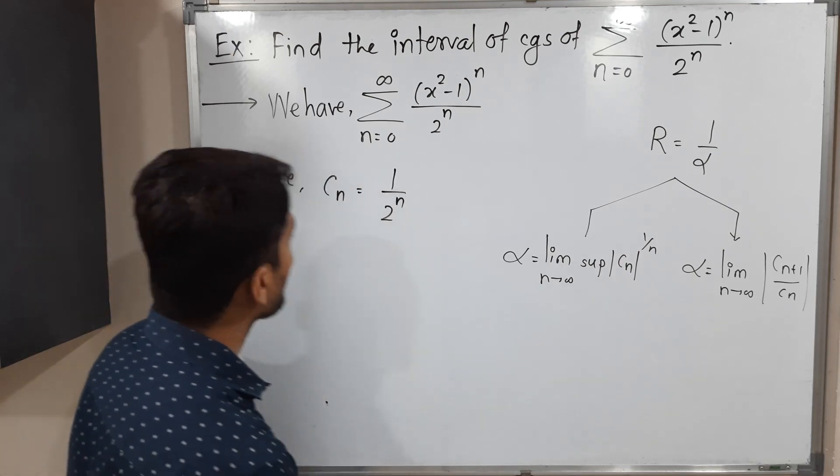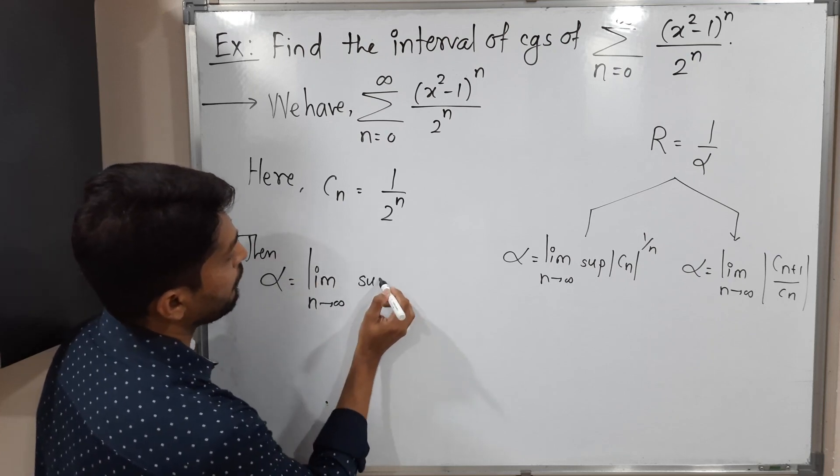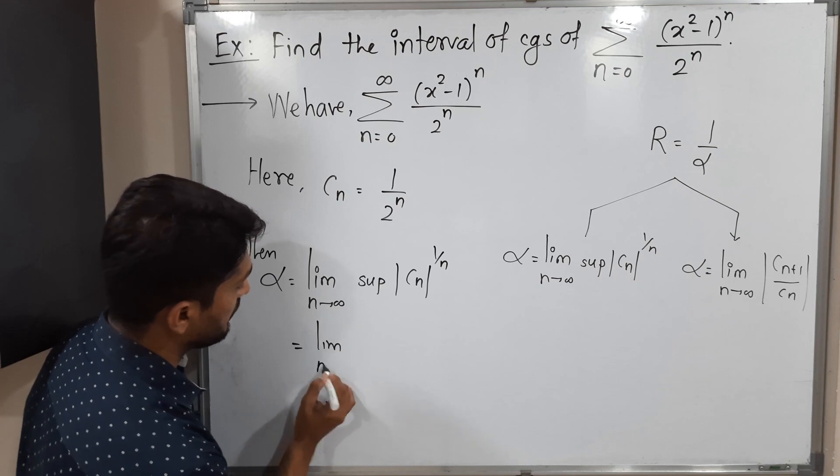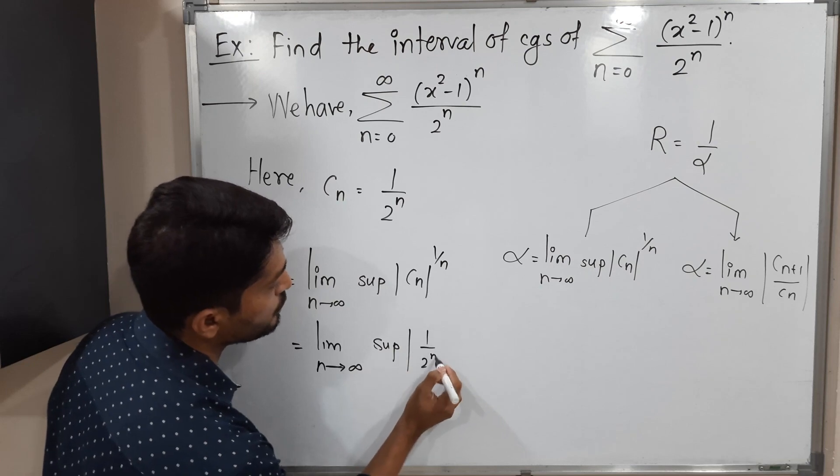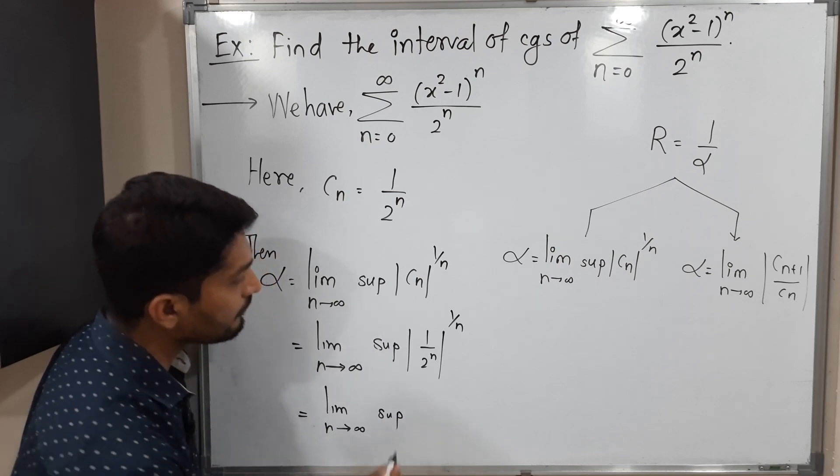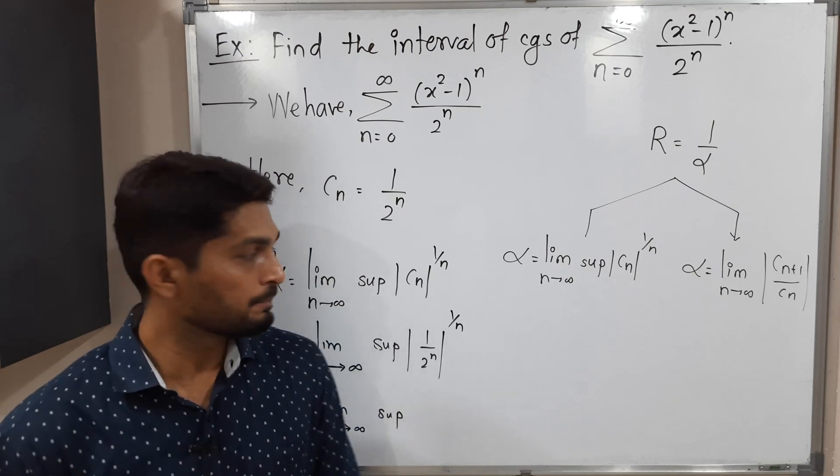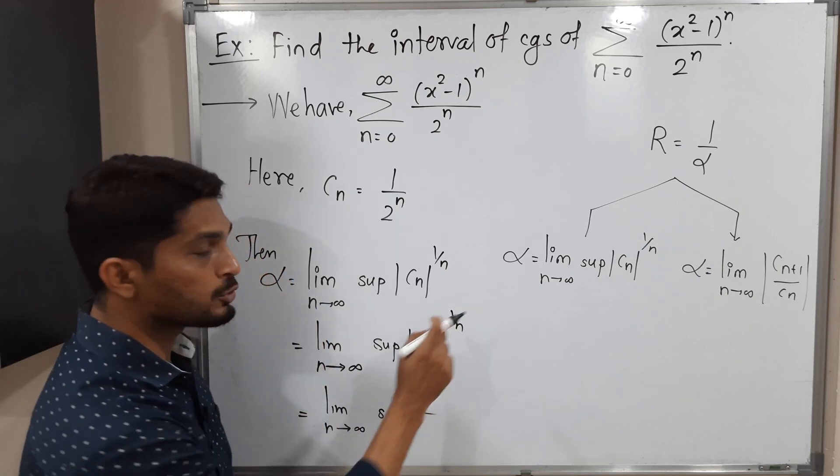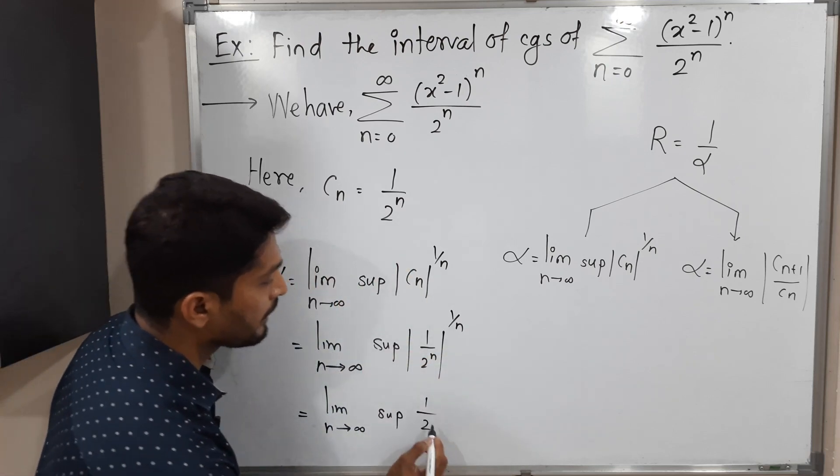Then α equals limit as n tends to infinity of the supremum of |cn|^(1/n). Let us put the value of cn: limit as n tends to infinity, supremum of |(1/2)ⁿ|^(1/n). This equals limit as n tends to infinity, supremum of—the numerator and denominator have the same power 1/n, so we can take separate powers. 1^(1/n) is 1, and 2ⁿ raised to 1/n, so in power n and 1/n will cancel and simply we will have 2.